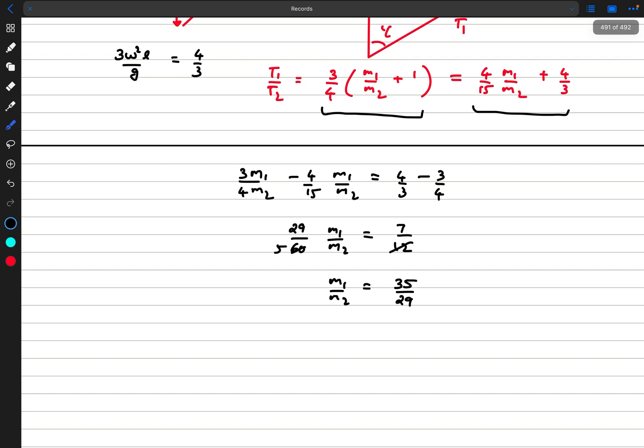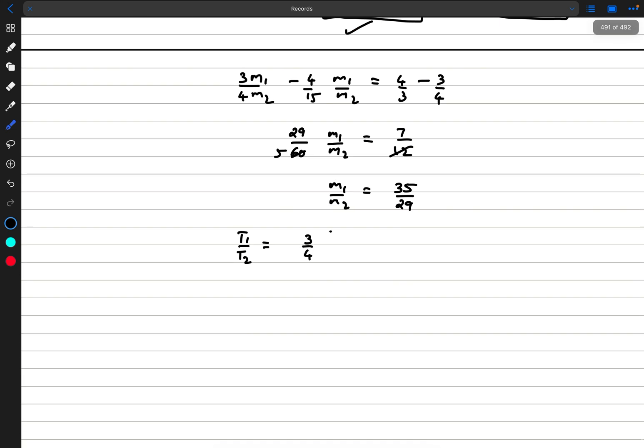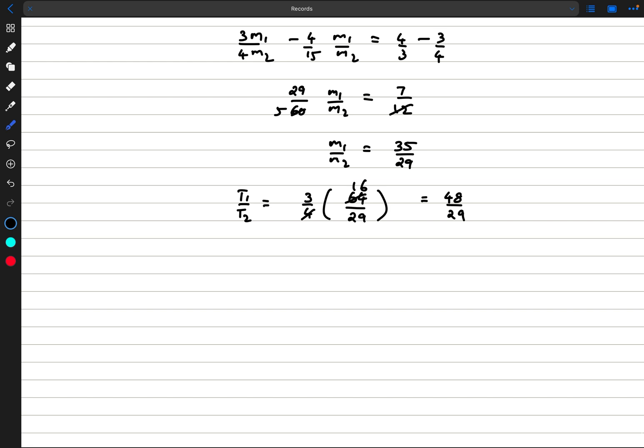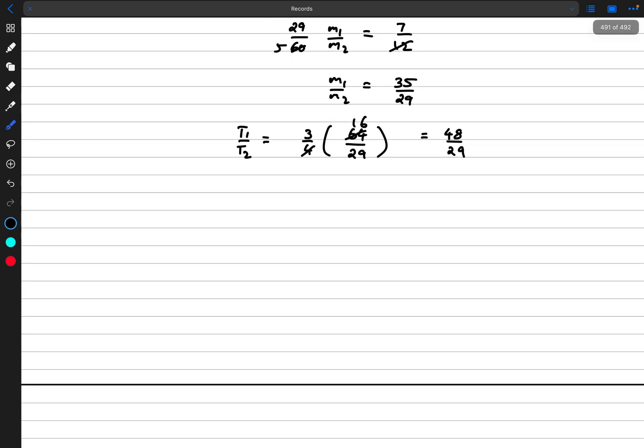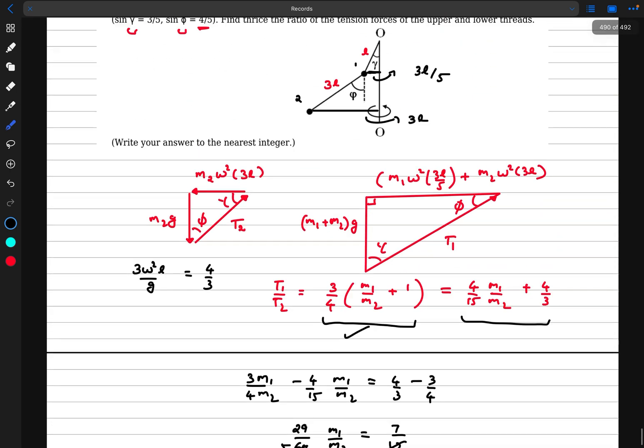Now we can put it into this first equation. So we get t1 by t2 as 3 by 4 times 1 plus m1 by m2. So if I add 35 and 29, I get 64, and then we have divided by 29. So this cancels out with this, so this is going to be 48 divided by 29. And we wanted 3 times this value, so the answer is going to be 3 times 48 divided by 29, and this turns out to be 4.9655. And I guess this was an integer type section, so rounded off this would be 5. So if I didn't make any calculation mistake, this should be correct.